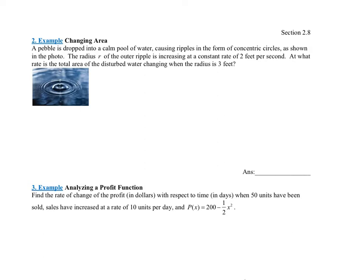Example 2: Changing area. A pebble is dropped into a calm pool of water, causing ripples to form in concentric circles. The radius R of the outer ripple is increasing at a constant rate of 2 feet per second. At what rate is the total area of the disturbed water changing when the radius is 3 feet?